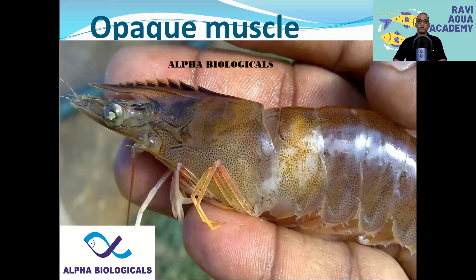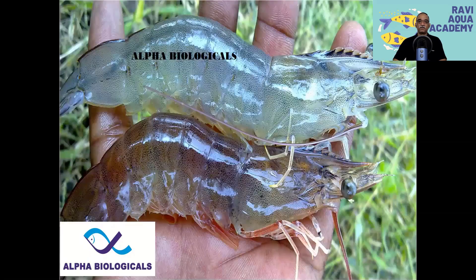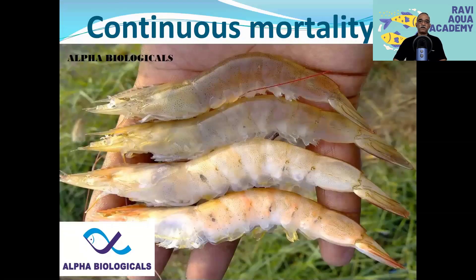In some cases of running mortality, you find white muscle, which is why most farmers think it is mineral deficiency and apply huge quantities of minerals. If you do sampling, you can find all four stages of running mortality: healthy, stage one, stage two, stage three, and after stage four the shrimp die. This is stage four — it becomes dark red. After stage four, mortality starts. The mortality is continuous — some shrimp are just dead, some died a few minutes ago, some one day old, some two days old.